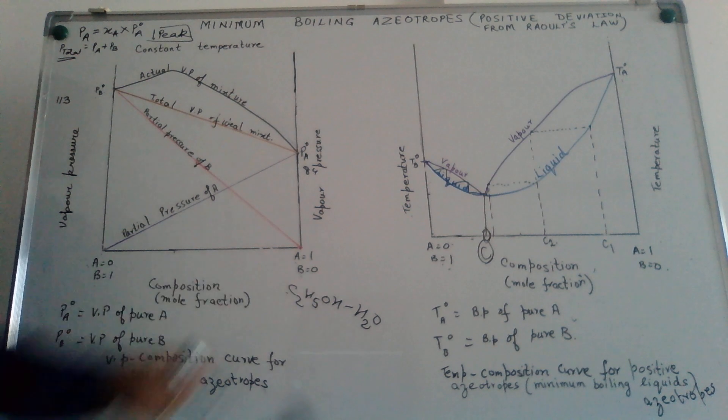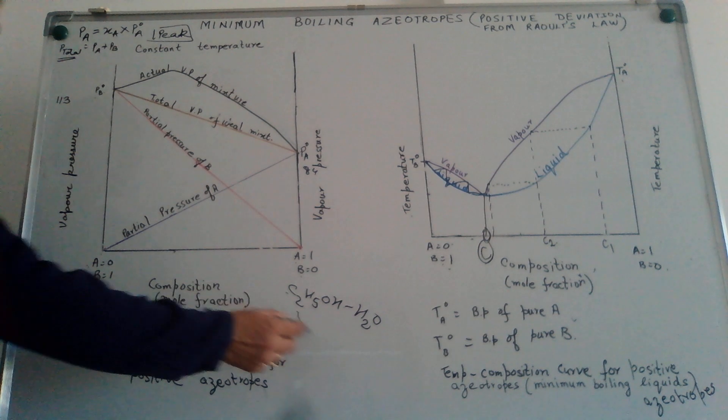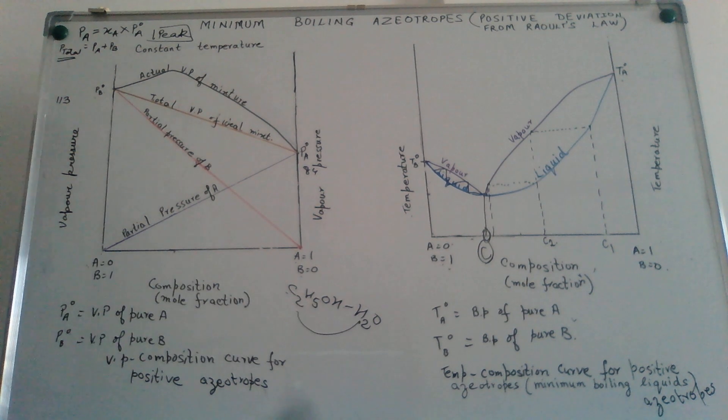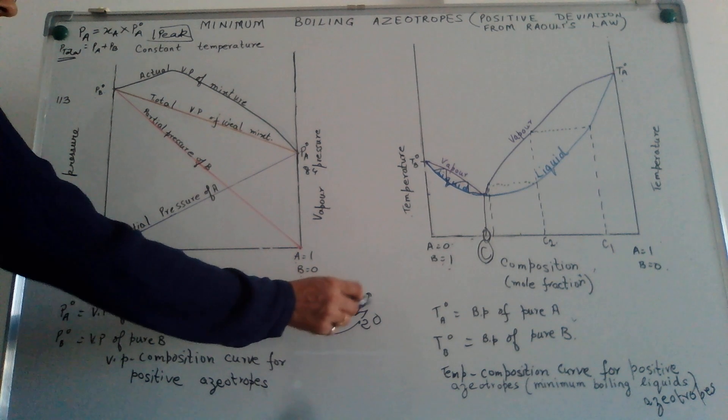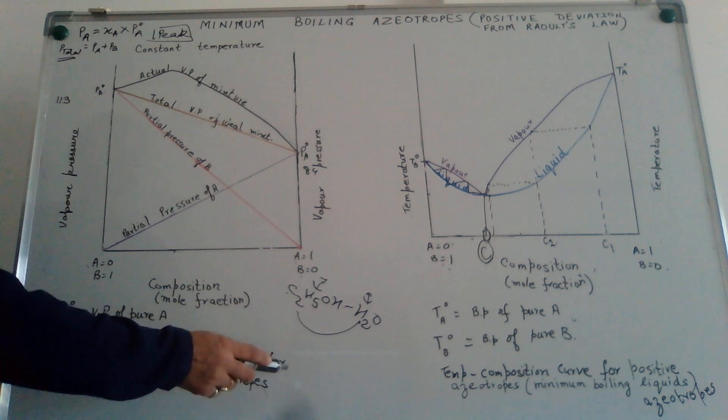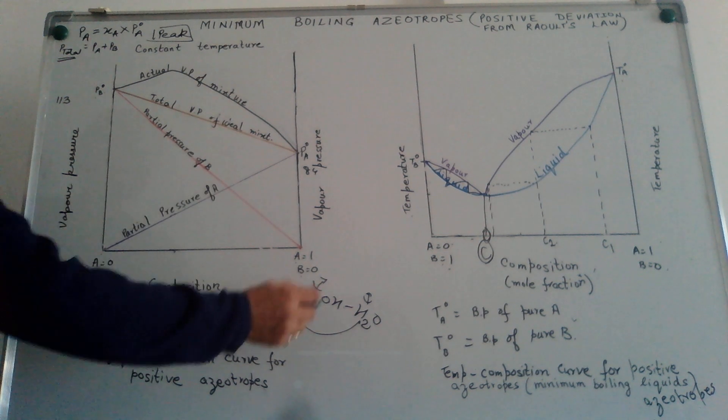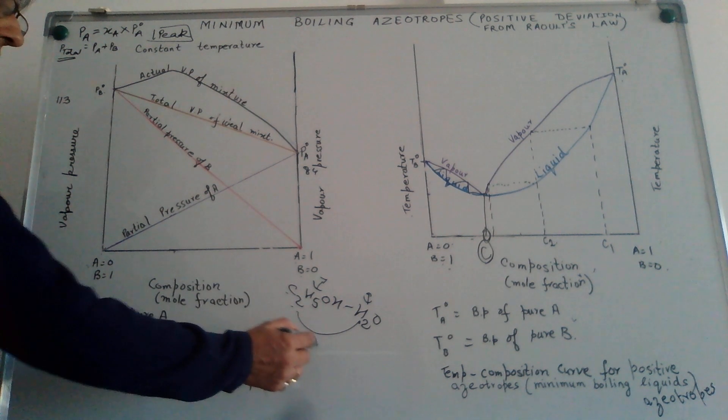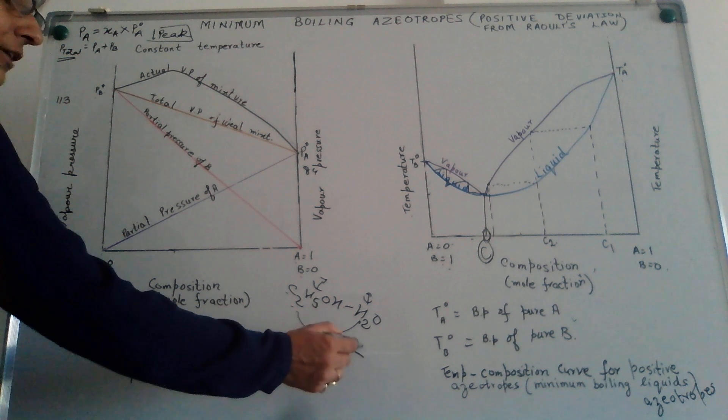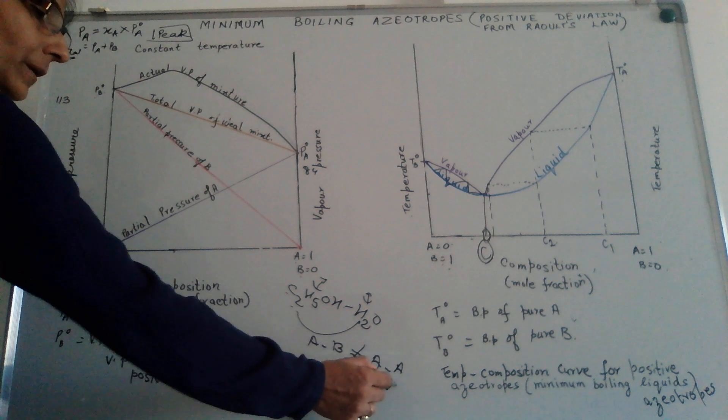Between alcohol molecules, there is hydrogen bonding. Between water molecules, there is hydrogen bonding. Between alcohol and water, the extent of hydrogen bonding is not as strong as in between two alcohol molecules or between two water molecules. So, what will happen is, the tendency to escape from the liquid for each of these increases. In other words, our A-B interactions or forces of attraction are not as strong as between A-A or B-B.